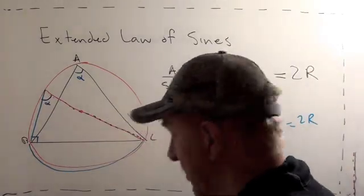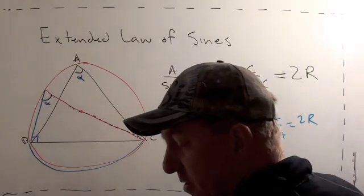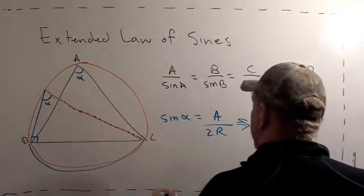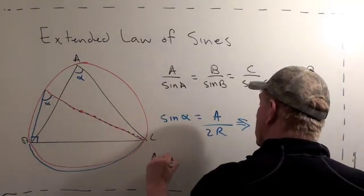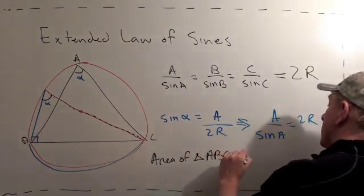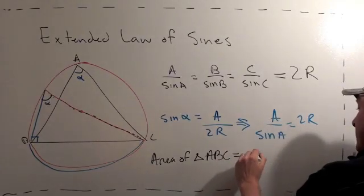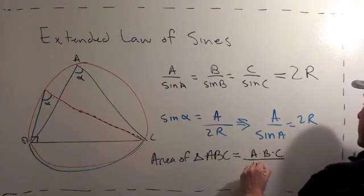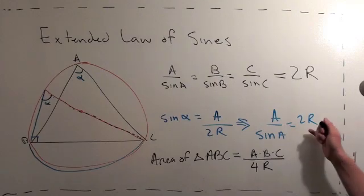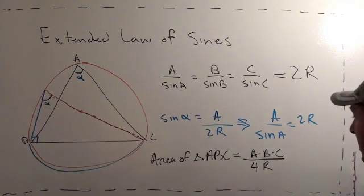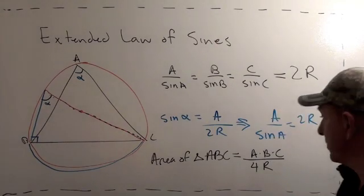And some great problems. One of the problems asks you to prove that the area of triangle ABC equals the product of the sides A times B times C over four times the radius of the circumscribed circle. So from this result, you can derive a new area formula for a triangle in terms of the sides, different from Hero's formula.